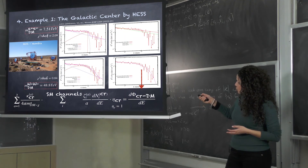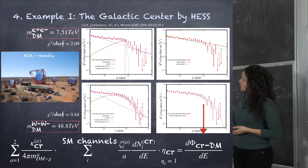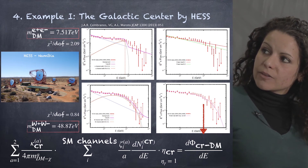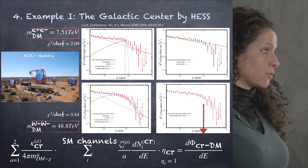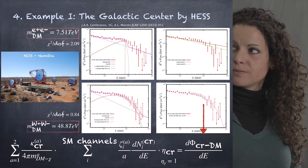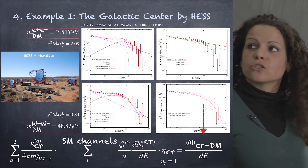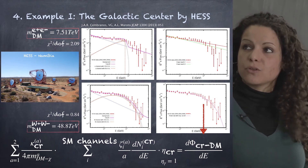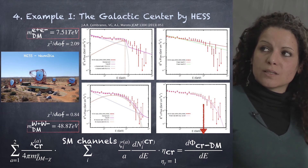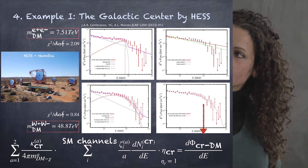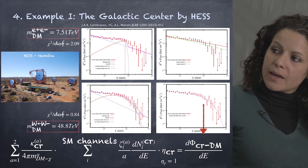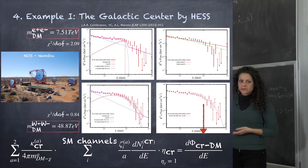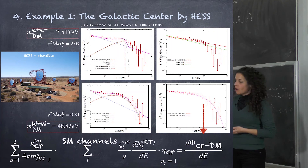These two simulated fluxes show what we generate for two different annihilation channels. In one case, we have annihilation in the electronic channel; in the other, annihilation in the bosonic channel. The flux has a different shape depending on the annihilation channel. These data points are not well described by dark matter annihilating in the leptonic channel — shown by the chi-squared pattern being close to two — but there is a nice explanation with dark matter annihilating in the bosonic channel. This signal gives us a possible mass estimate for dark matter.